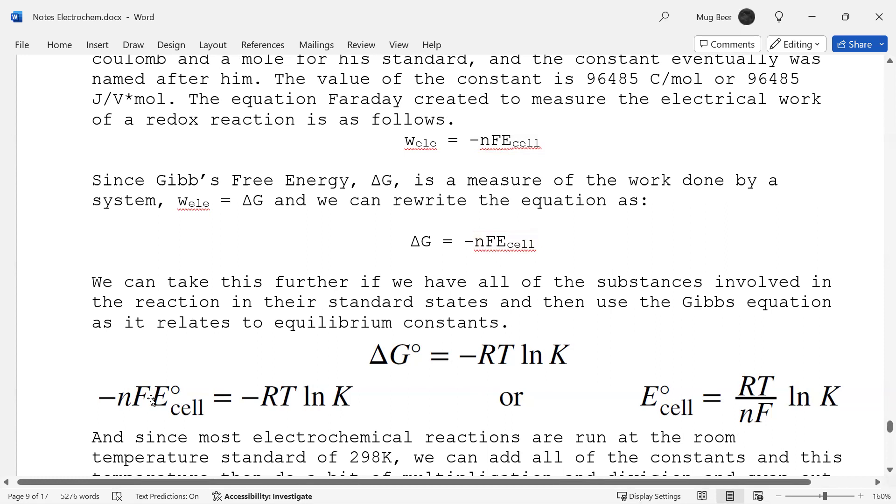All right, so over here, what we've done is we've taken those two terms and set that equal to each other, and then we can rearrange it a little bit on that right side. So I've moved the moles and the Faraday's constant over to the right side. I've left the voltage of the cell there. So we know that the voltage of the cell is going to be equal to the ideal gas constant times the temperature in Kelvin divided by moles divided by Faraday's constant. And then we take the natural log of the equilibrium constant for the cell.